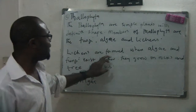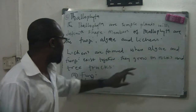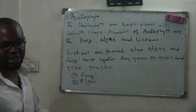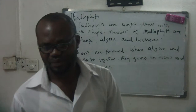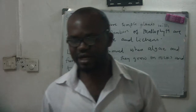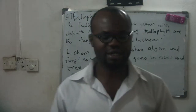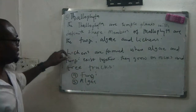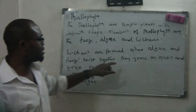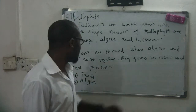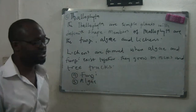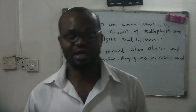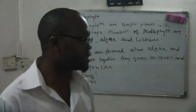Lichens are formed when an algae and a fungi exist together. They actually grow on rocks and tree trunks.